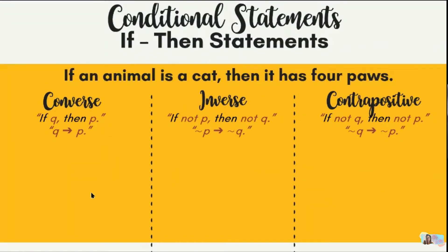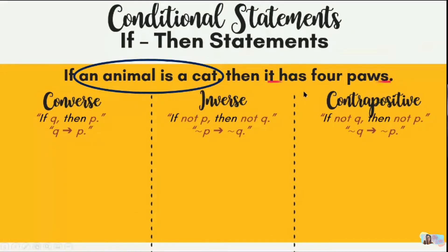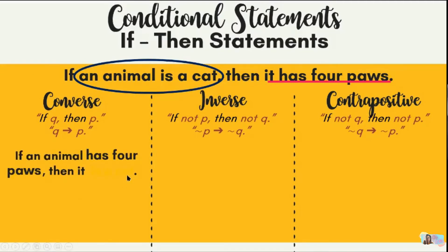Example four: 'If an animal is a cat, then it has four paws.' The hypothesis is 'an animal is a cat' — the key phrase is 'is a cat.' The conclusion is 'it has four paws' — the key phrase is 'has four paws.' For the converse, student Clark answers: 'If an animal has four paws, then it is a cat.' Correct.